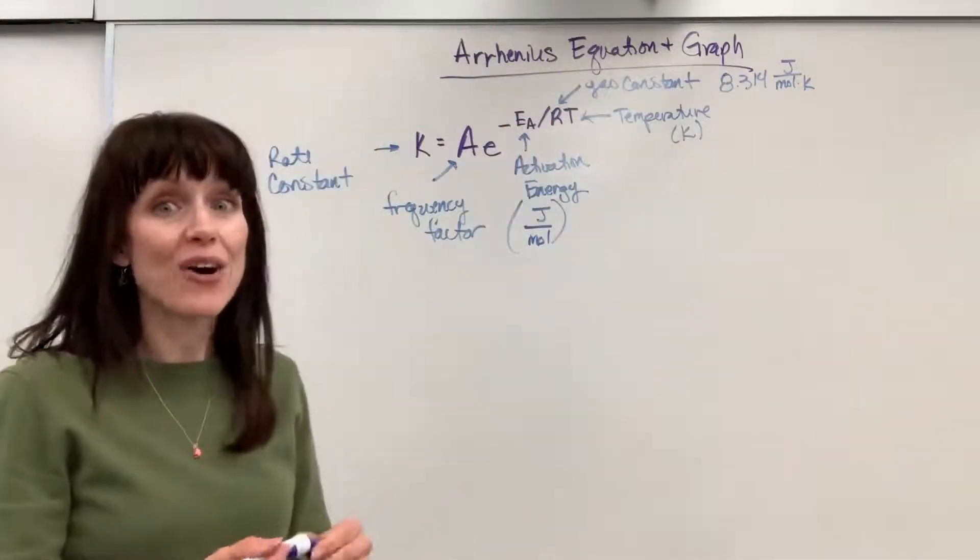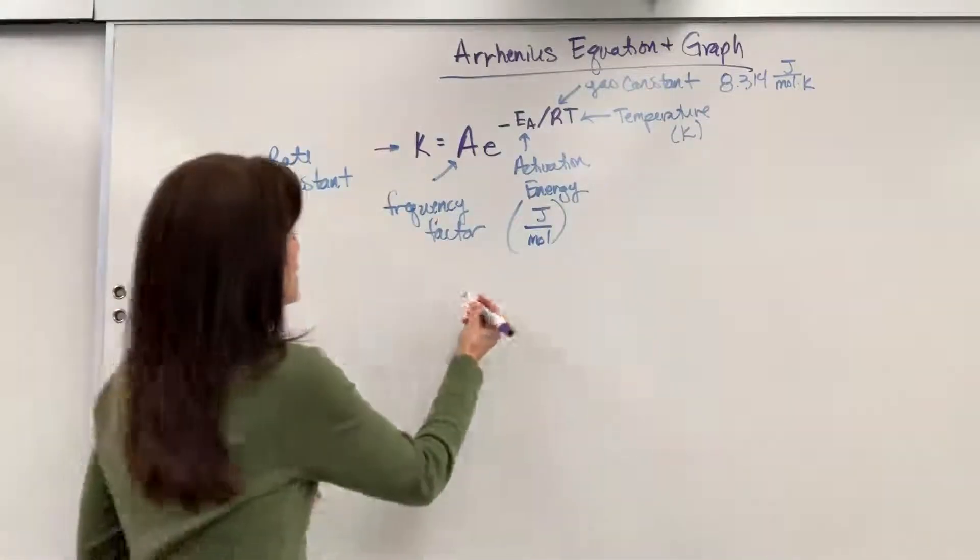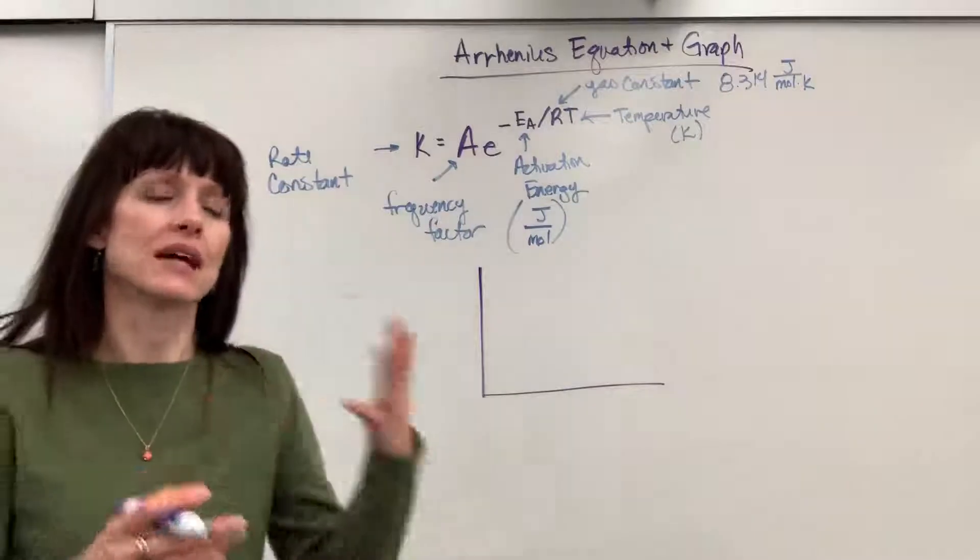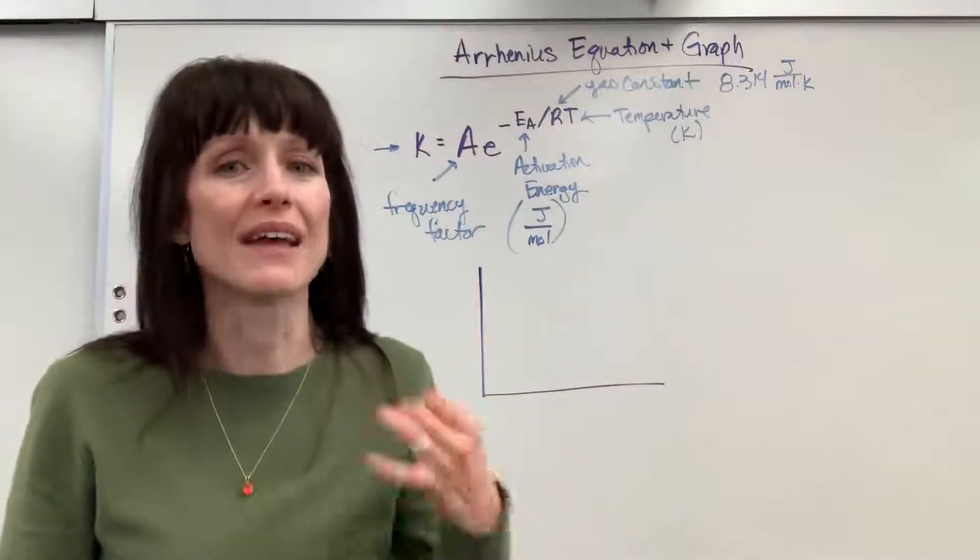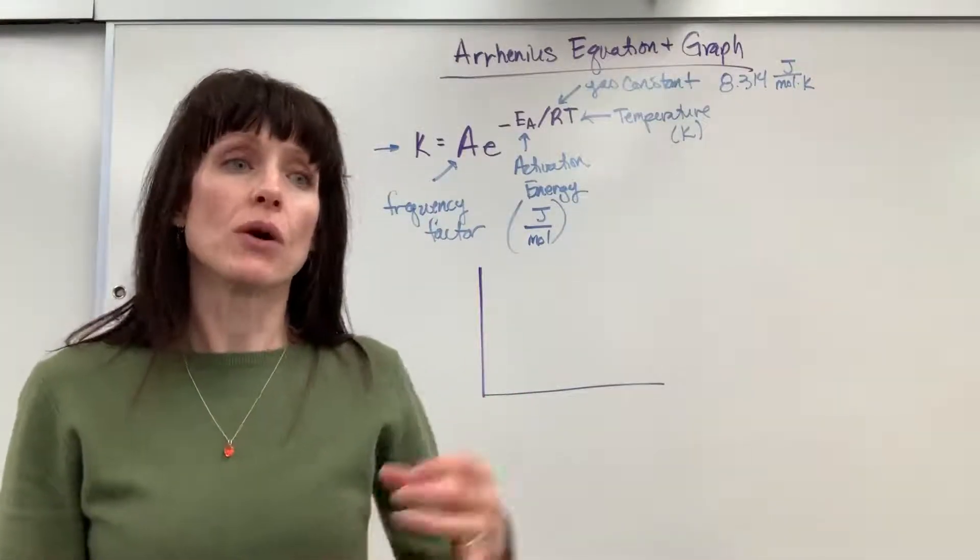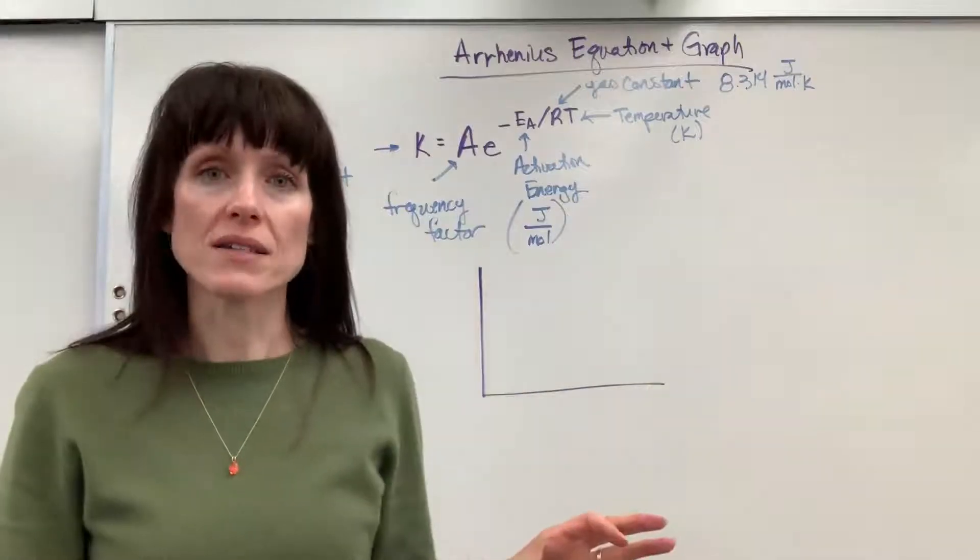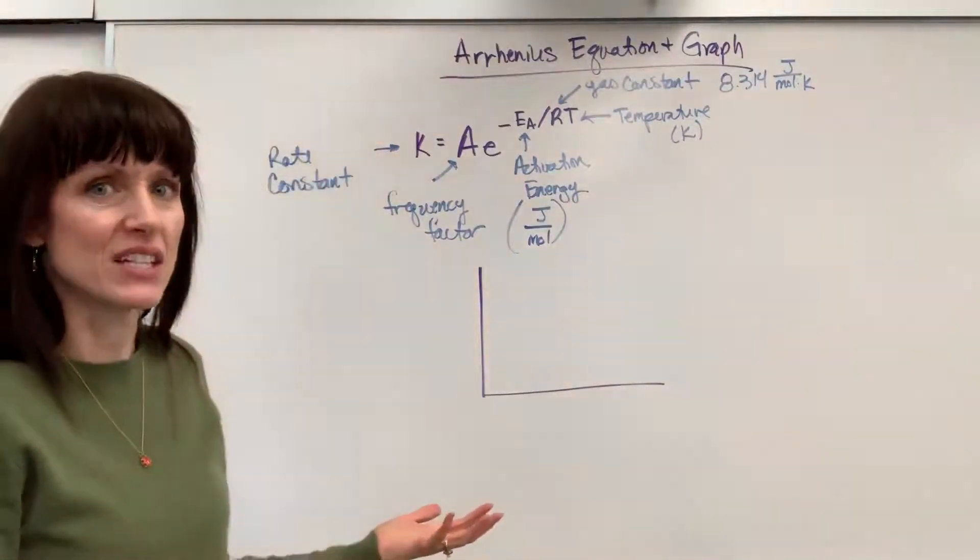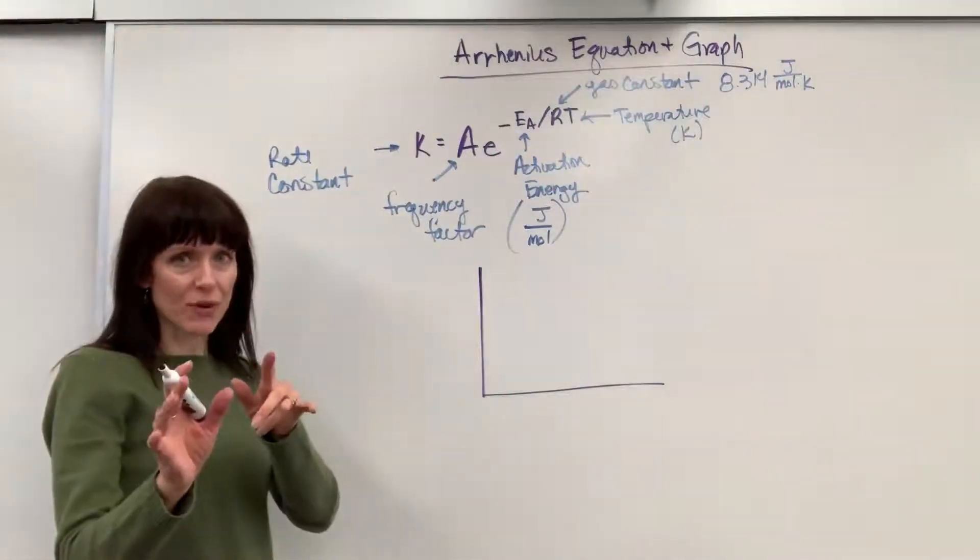Now, the outflow of this is the graph. The Arrhenius graph looks like this, and it's really neat because it relates that K, the rate constant, to the activation energy. It means knowing rate law, knowing the rate constant, we can calculate the activation energy.